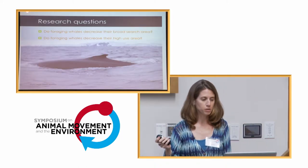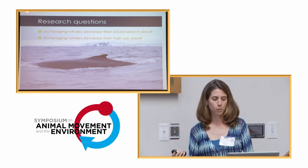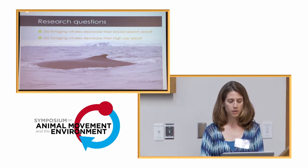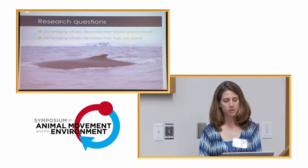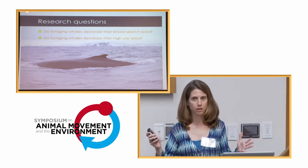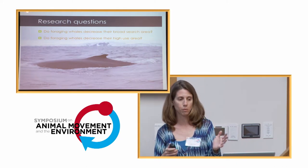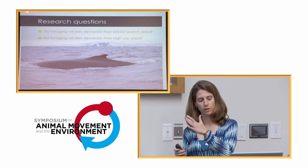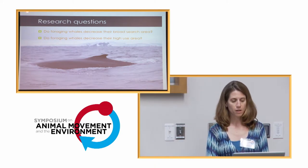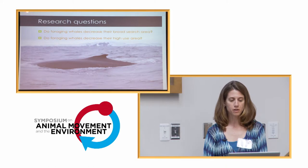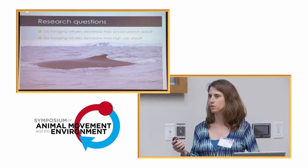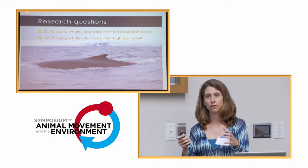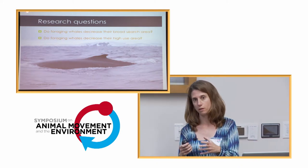That relationship between the krill and the humpback whales has led us to ask two questions for this research. First, are the whales decreasing their broad search area as the season progresses from summer into fall and winter? And as the krill are moving closer into shore, do the whales also decrease their foraging high-use areas — foraging in much more focused, smaller areas as the krill swarm in smaller areas closer to shore?